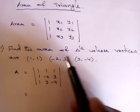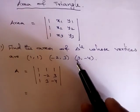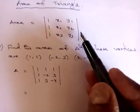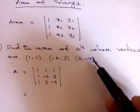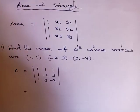Find the area of the triangle whose vertices are given like this. The formula is this one - write this formula and substitute these values. This is x1 y1, x2 y2, x3 y3. Substitute everything.